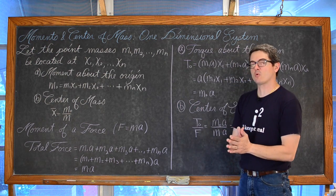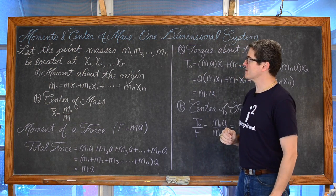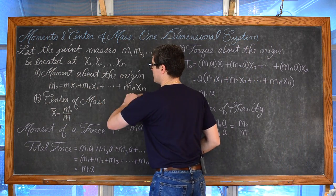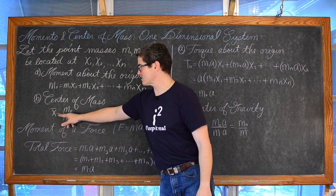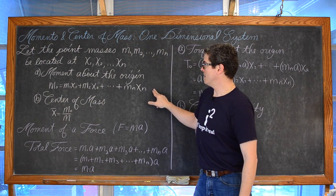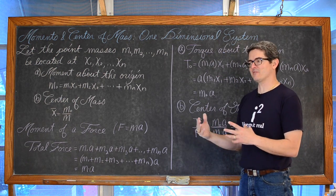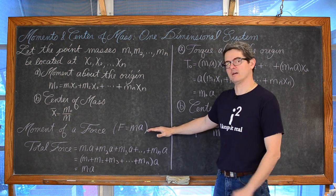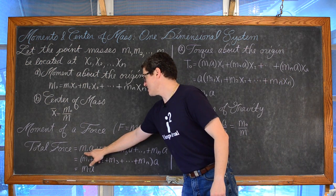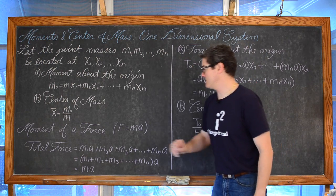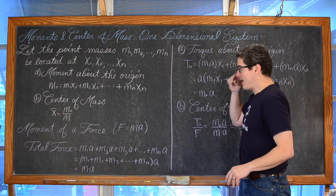Clean version: let point masses m₁, m₂, up to mₙ be located at x₁, x₂, up to xₙ. The moment about the origin is the sum of all products of point masses and their distances from the origin. The center of mass x̄ on a one-dimensional system equals m sub o — the moment about the origin — divided by the total mass of the system.